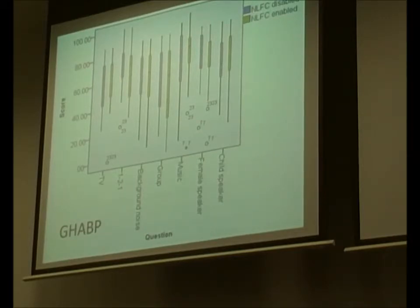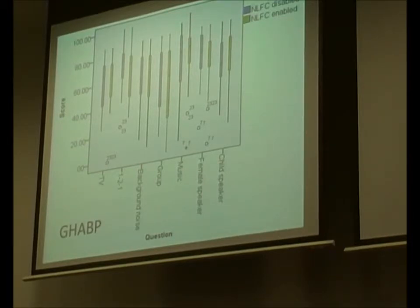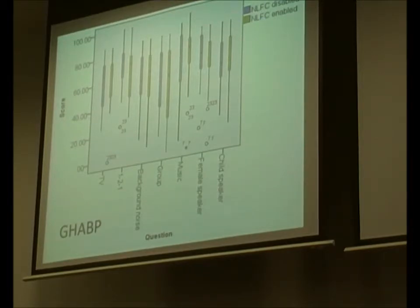Of the five studies using self-report measures with frequency compression, three didn't find any benefit including on self-report. One unpublished PhD found improvements in speech recognition but not in self-report. The Glyster study found that when children were asked which programme they preferred after trying frequency compression on and off on a memory programme, children chose frequency compression, which was backed up by their speech test results. But self-report and objective results coinciding is not common in this literature.